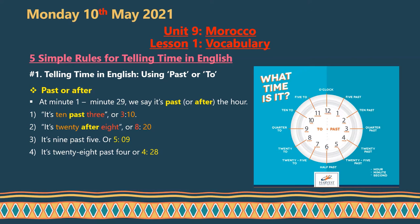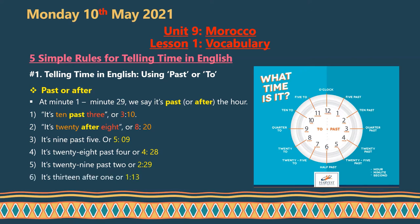Number four: '28 past 4' means 4:28. Number five: '29 past 2' means 2:29. And the last example: 'thirteen after one' means 1:13.